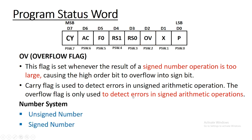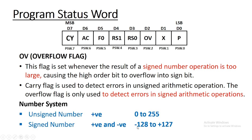In number systems there are two types of numbers: unsigned numbers and signed numbers. Unsigned numbers are by default positive numbers, and signed numbers are used to represent positive as well as negative numbers. Accordingly, the range for unsigned numbers is from 0 to 255 when using 8 bits to represent any number. Using the same number of bits, signed numbers can represent from minus 128 to positive 127.